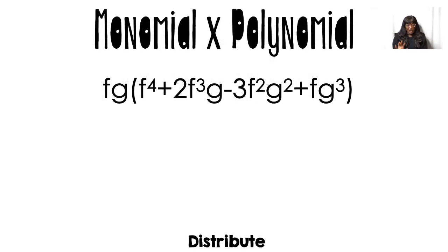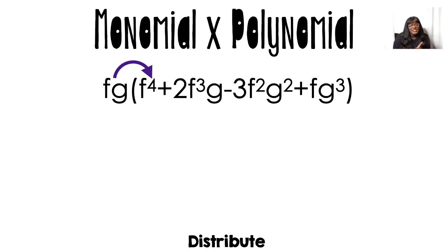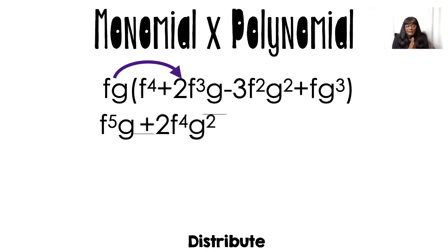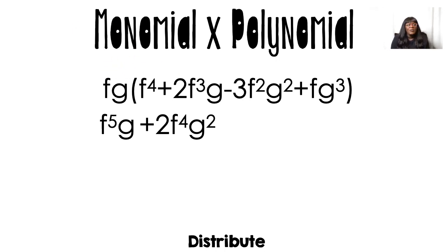First we want to talk about a monomial times a polynomial — that's just one term being distributed into all the other terms. This is super easy and most of you are pretty good at this already. So I'm going to multiply fg times f to the fourth power, which gives me f to the fifth power, and then the g — there was nothing to multiply it by so it's just g. Then I distribute fg again to the next term, which is f cubed g, so the 2 comes down, f times f cubed is f to the fourth, and g times g is g squared. You want to do the coefficient, the f's, and then the g's separately.